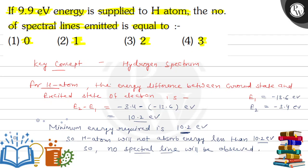That is why the answer is zero. Spectral line emitted is equal to zero. Option one is the correct answer. Hope you understood it well.